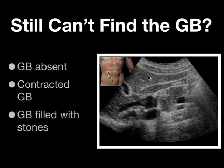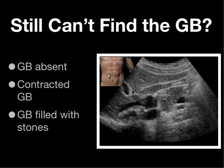What if you still can't find the gallbladder but you're actually able to see the liver? You've got to think of other potential causes. One is that the gallbladder is absent — laparoscopic cholecystectomy scars are not as obvious as the old open scars, and sometimes patients forget they had their gallbladder out. Another option is that the gallbladder could be contracted. And the other possibility is that the gallbladder is filled with stones.